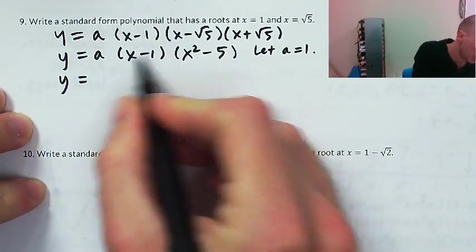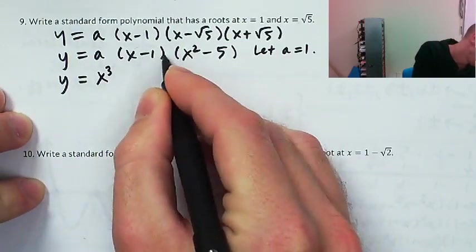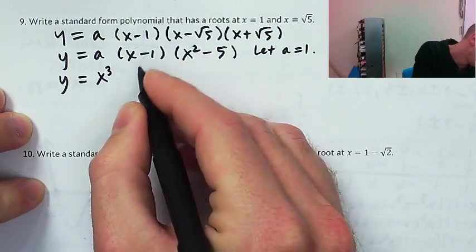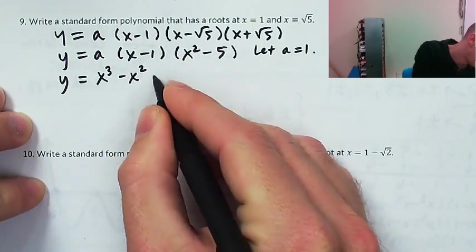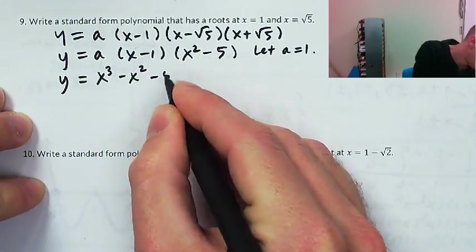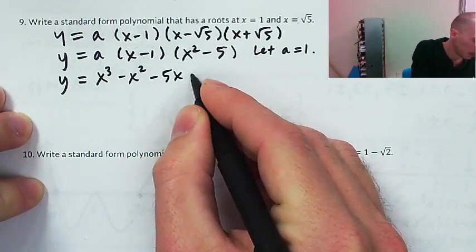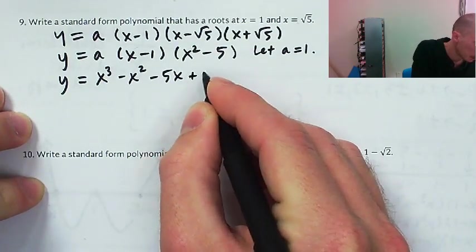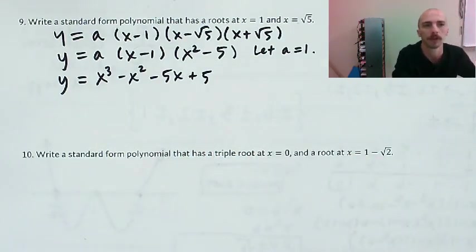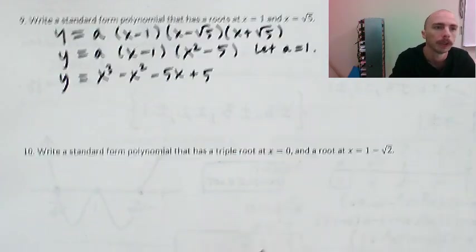I'm going to multiply x times x squared, that'll be x to the third. Inside would be negative x squared, outside is negative 5x, and the last two multiply together to get plus 5. And so that's the standard form polynomial — it's got the roots we need and it's got rational coefficients.